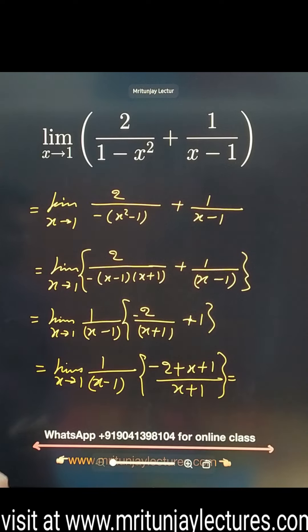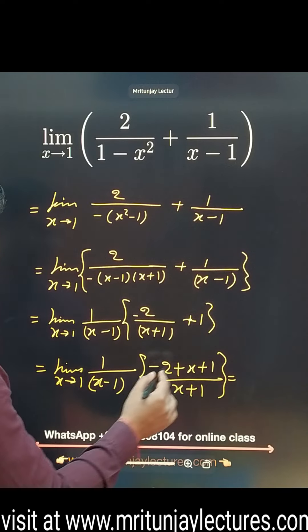Now x minus 1 is common. Taking x minus 1 common, we get minus 2 upon x plus 1, plus 1. Limit x tends to 1 upon x minus 1. Here minus 2 is clear.